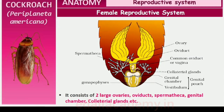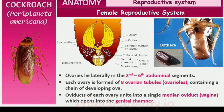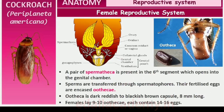The female reproductive system consists of two large ovaries lying laterally in the 2nd–6th abdominal segments. Each ovary is formed of a group of 8 ovarian tubules or ovarioles containing a chain of developing ova. Oviducts of each ovary unite into a single median oviduct, also called vagina, which opens into the genital chamber. A pair of spermathecae is present in the 6th segment opening into the genital chamber. Sperms are transferred through spermatophores. The fertilized eggs are encased in capsules called oothecae — dark reddish to blackish-brown capsules about 8 mm long, dropped or glued to a suitable surface near a food source. On average, females produce 9–10 oothecae, each containing 14–16 eggs.